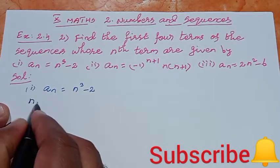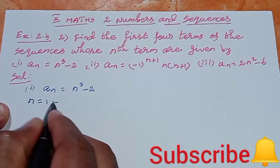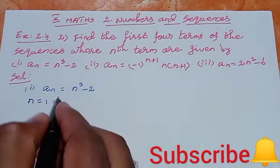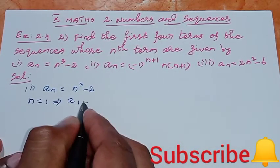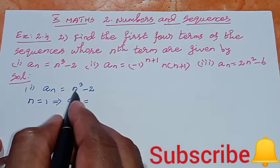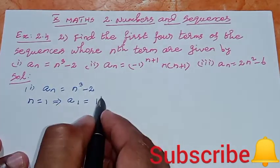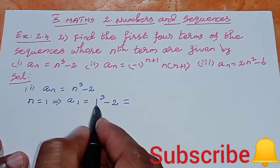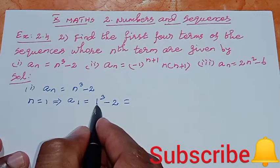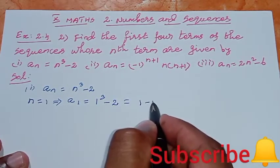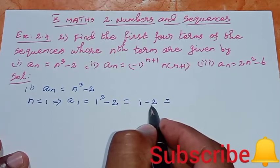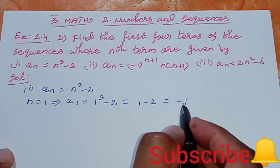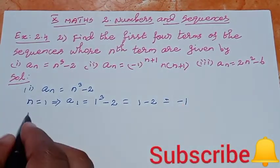So, for the first sequence, we substitute n equal to 1. A1 is equal to n to the power 3 minus 2, which equals 1 cubed minus 2, equal to 1 minus 2, so the first term is minus 1.